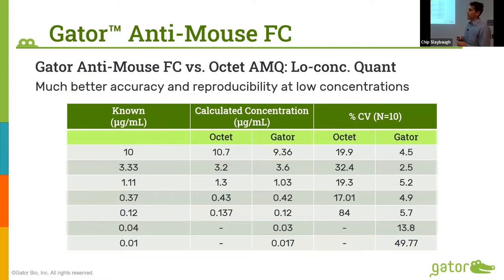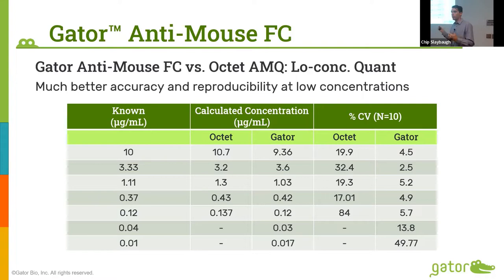We've also created an anti-mouse FC probe that is a very robust probe. This has historically been a difficult probe to use — the dynamic range has always been fairly small and it couldn't be regenerated. With our new anti-mouse FC probe, not only can you regenerate it over and over, but you can detect down to the nanogram per ml range. We've increased both the lower limit of detection and the upper limit significantly — it's approximately a five-log dynamic range.